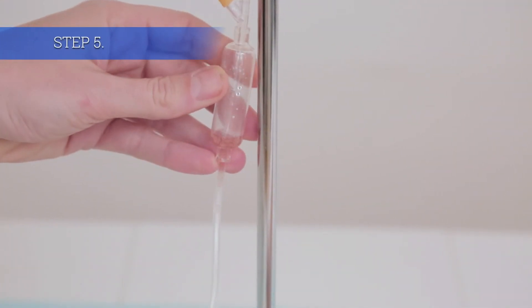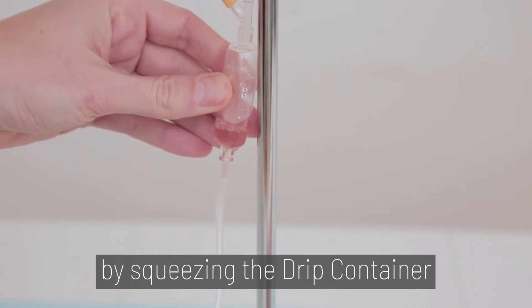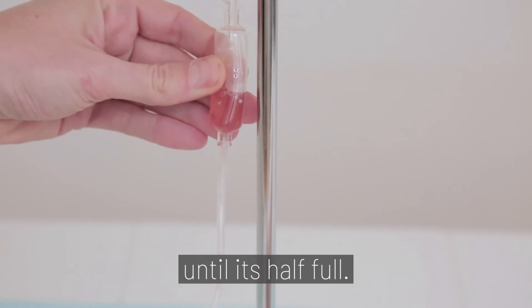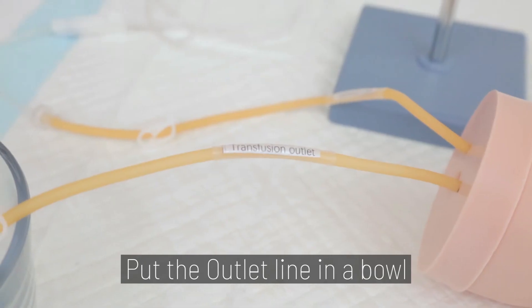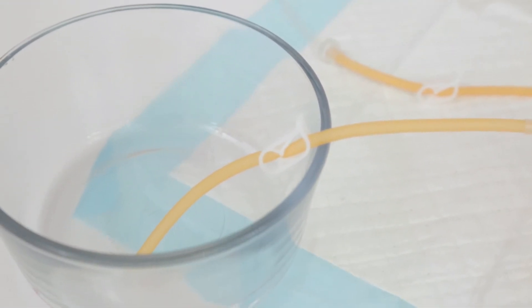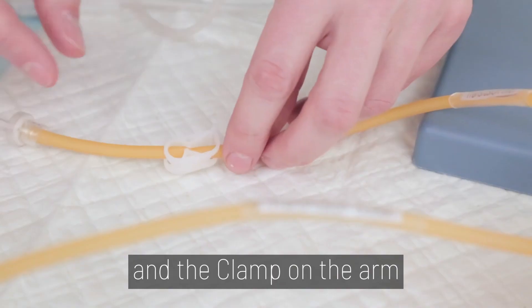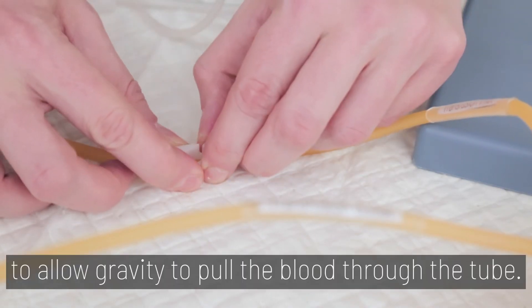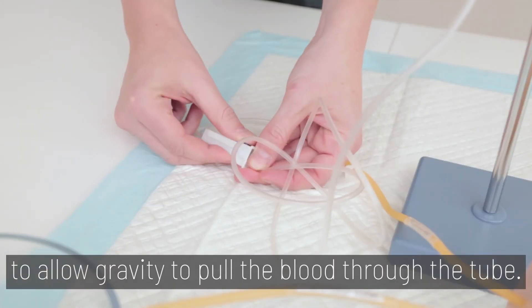Step 5. Prime your infusion line by squeezing the drip container until it's half full. Put the outlet line in a bowl to catch any spills. Release the roller clamp and the clamp on the arm to allow gravity to pull the blood through the tube.